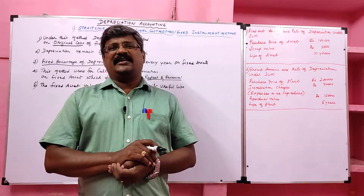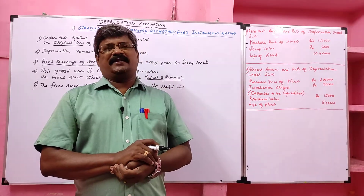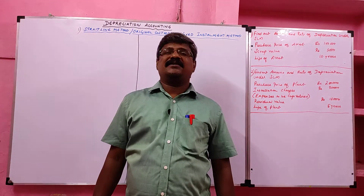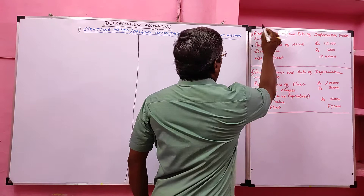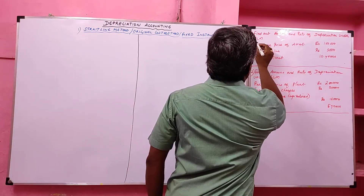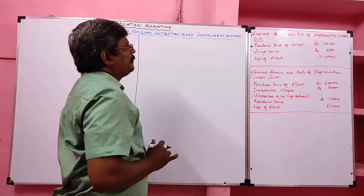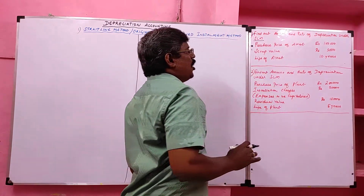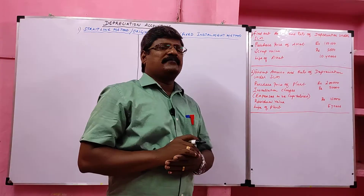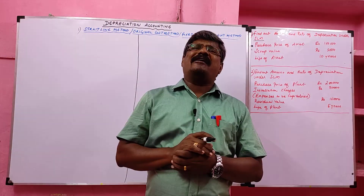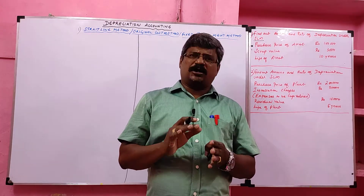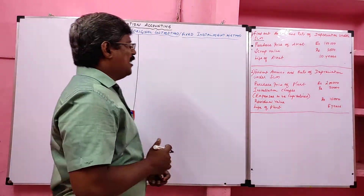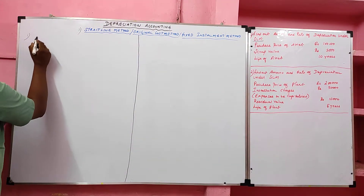Now we'll learn the calculation of amount and rate of depreciation under the Straight Line Method. For Problem 1, we need to find the amount and rate of depreciation. The three factors required are: purchase price of the asset, scrap value, and life of the asset. The formula for amount of depreciation is: Total Cost minus Scrap Value, divided by Life of Fixed Asset.